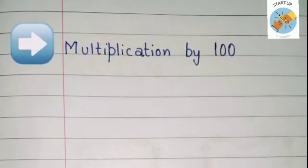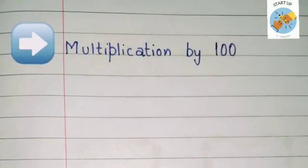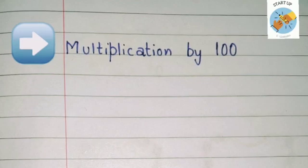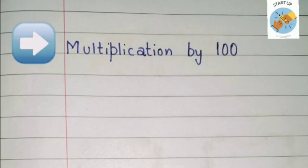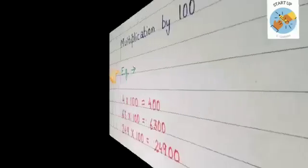Let's move on to multiplication by hundred. To multiply a number by hundred, we put two zeros at the end — that is in the ones and tens place — and then we multiply the other number.